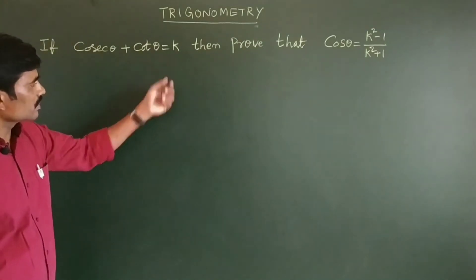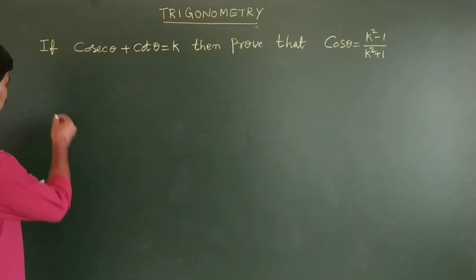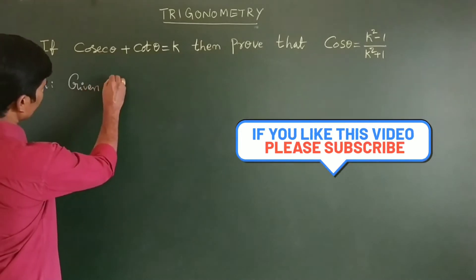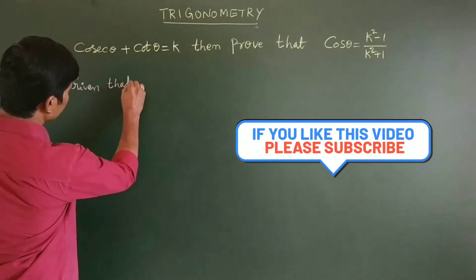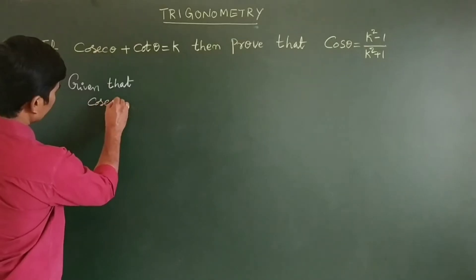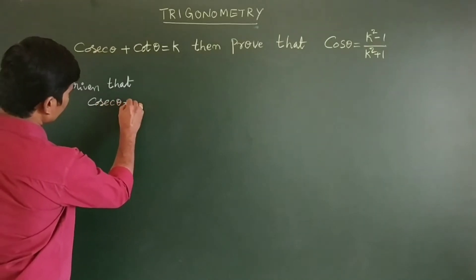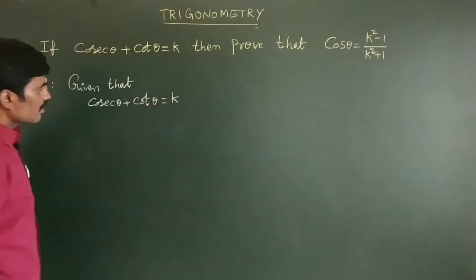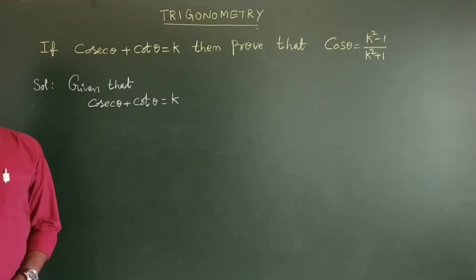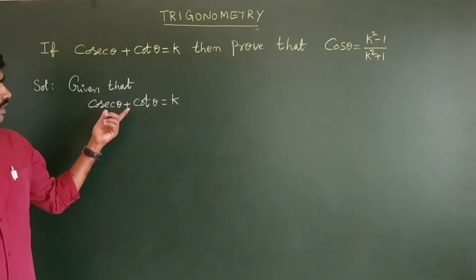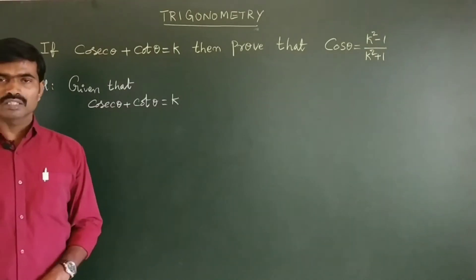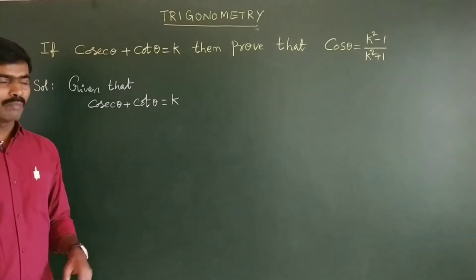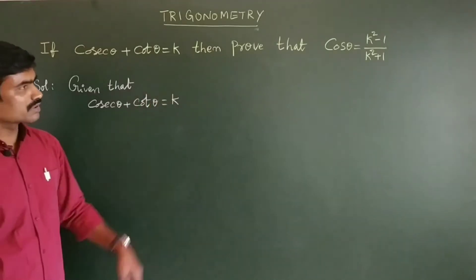Given: cosecant theta plus cot theta is equal to k — this is the given condition. In trigonometric identities, we know one identity related to cosecant theta and cot theta, that is, cosecant squared theta minus cot squared theta is equal to 1. By using this trigonometric identity, we can prove this easily.